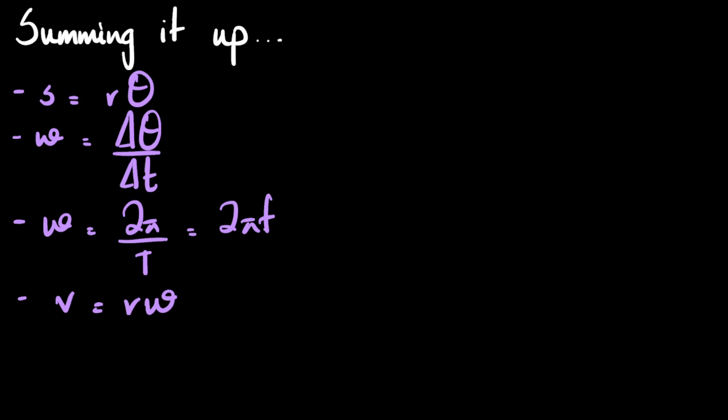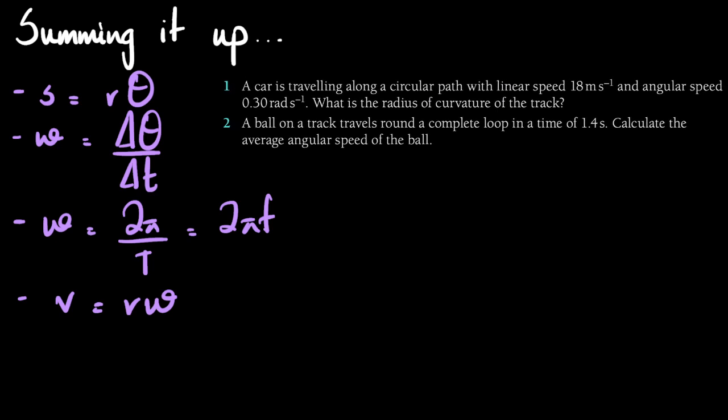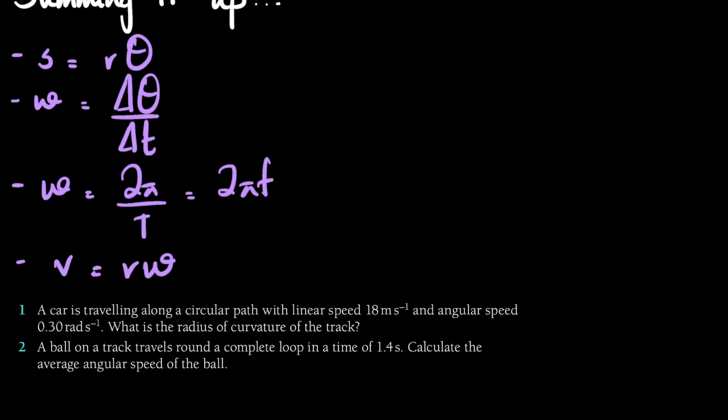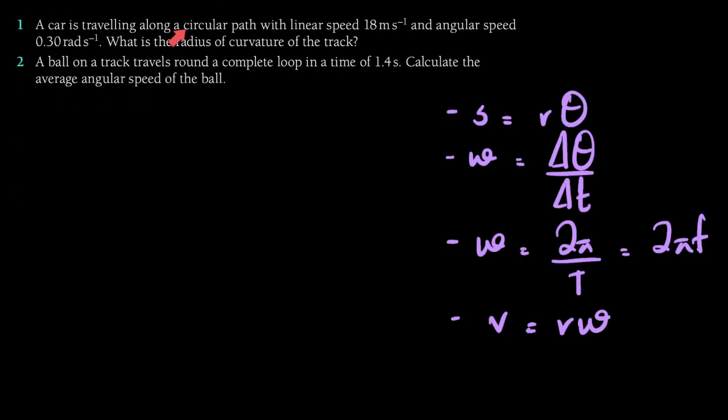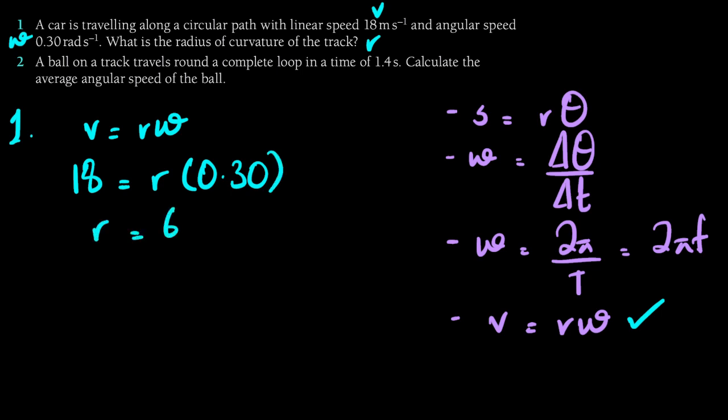Let's have a look at these questions. The first question says a car is traveling along a circular path with linear speed 18 meters per second and angular speed 0.3 radians per second. What is the radius of curvature of the track? We can use the equation v equals rω. So v is 18, r is what we need to find, and omega is 0.3. Using this, if we calculate the radius of the track, this turns out to be 60 meters.